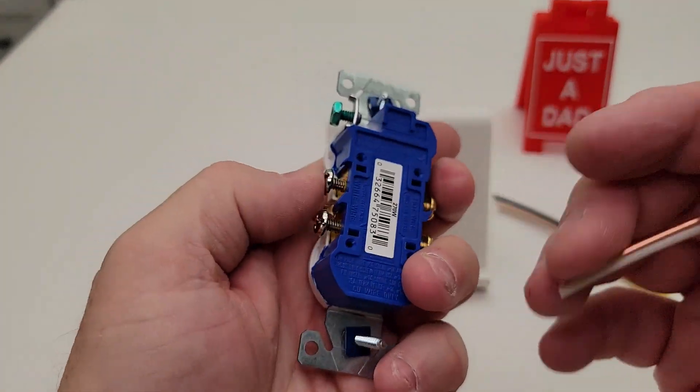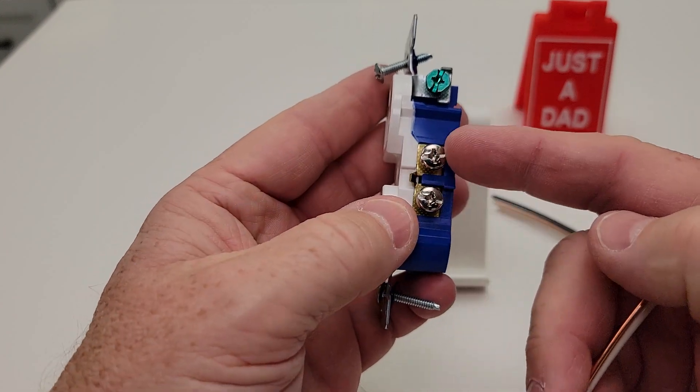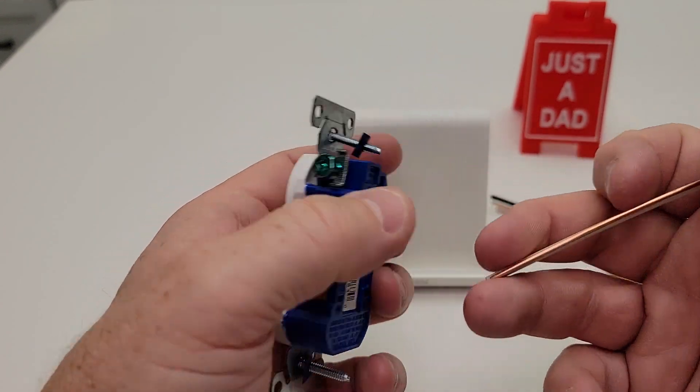You're going to do the same for the white wire. The white wire can go in either one of these on the white side.